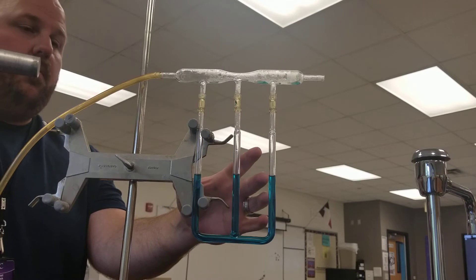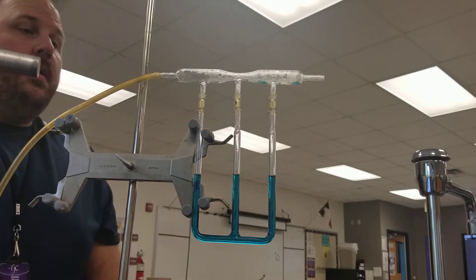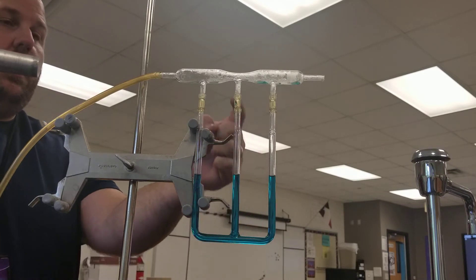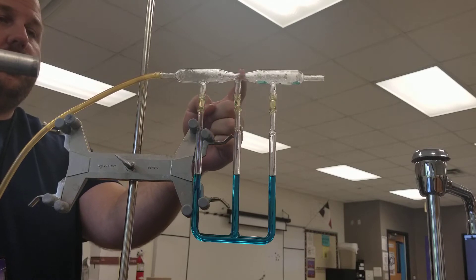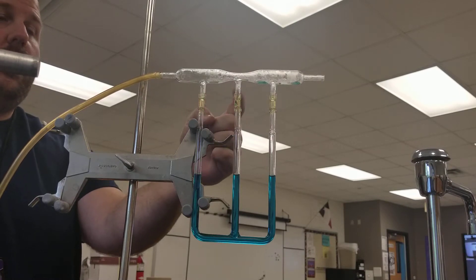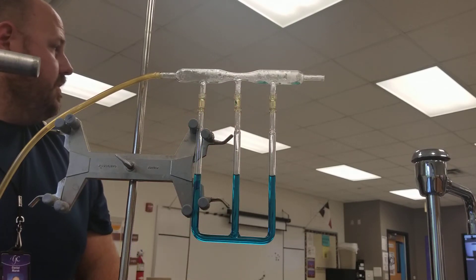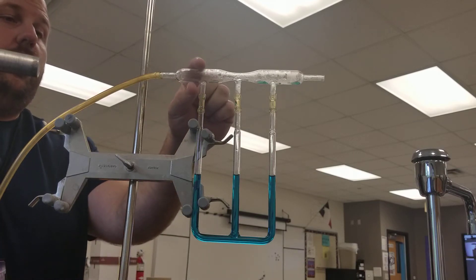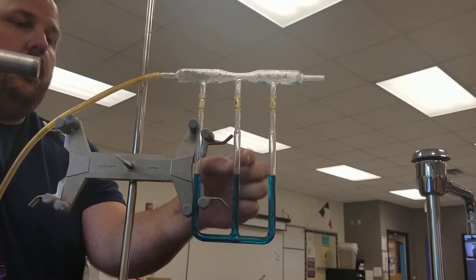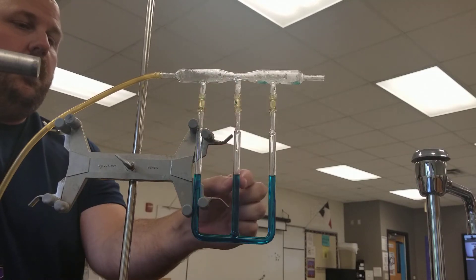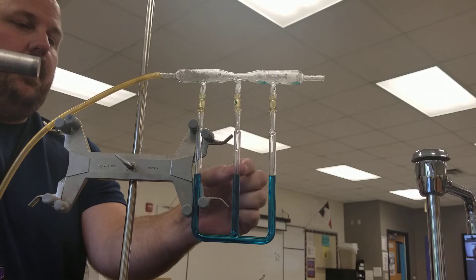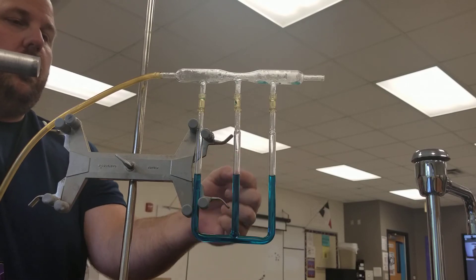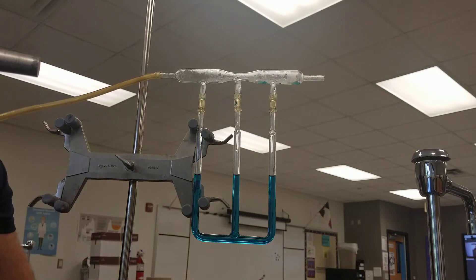Did you notice that the water level in the tube in the middle went up, whereas the other two, the water level went down just a hair? So the reason that the water level here goes up is because the fast-moving fluid through this part right here does not exert as much pressure as the slow-moving fluid over here. So the air pressure here is really small; there's less air pushing down on this part right here, so the water level goes up. Let's do that one more time.